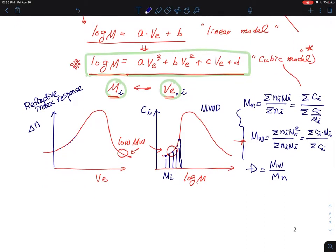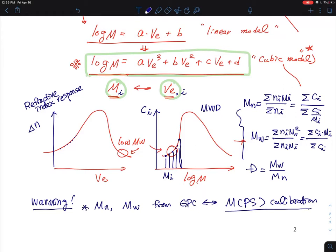There is a warning. The Mn, Mw from GPC rely on the GPC molecular weight from the polystyrene calibration, right? So therefore, if your sample is not the same as your calibrant, such as, let's say I have synthesized my polymer that is a polycarbonate, and then I put it into the GPC column, and that has been calibrated with a polystyrene standard, and you will certainly get those numbers, okay, but those numbers is based on polystyrene calibration.